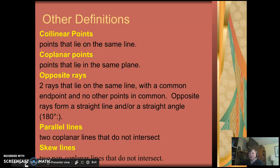Opposite rays form a straight line and or a straight angle, 180 degree angle. So you can imagine them meeting at one point and then going in opposite directions.